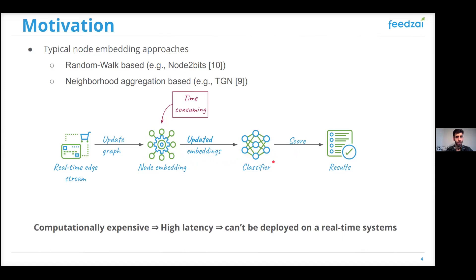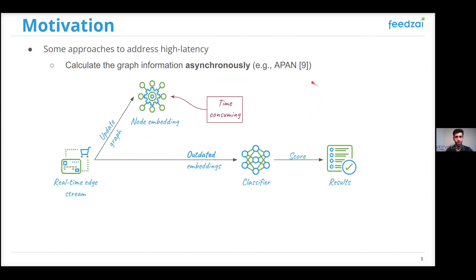In order to address this high latency, APAN algorithm proposes that we remove the node embedding component from the critical path and perform the embedding asynchronously. So when a transaction happens, the classifier will leverage outdated embeddings to generate a score.